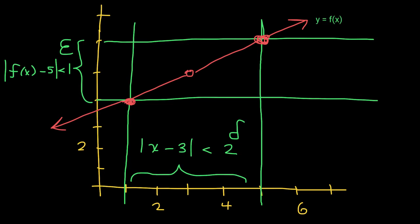What we want to show is that for any number epsilon chosen, we can find a value delta such that as long as the x values are less than delta units away from 3, your function values will be less than epsilon units from the limit, from 5.